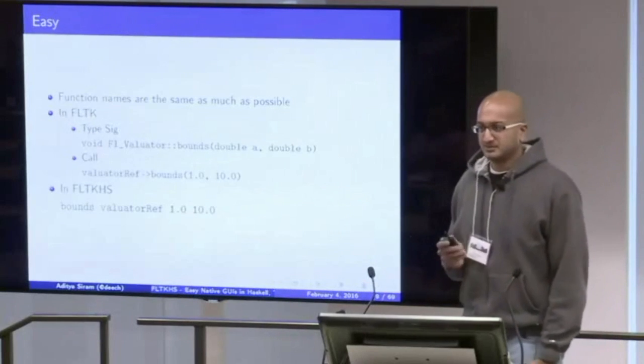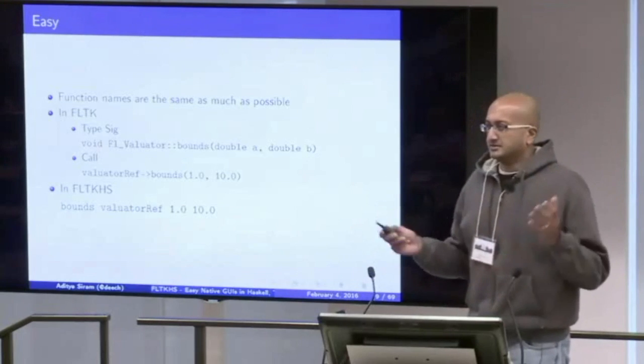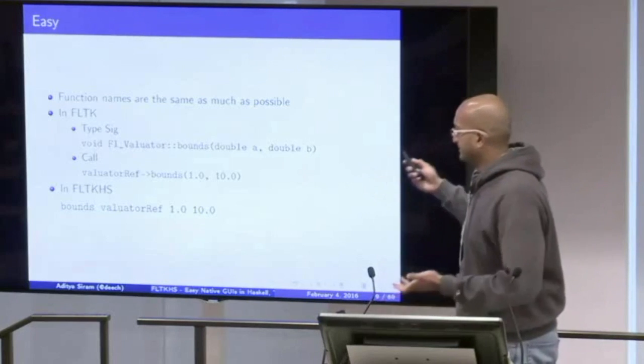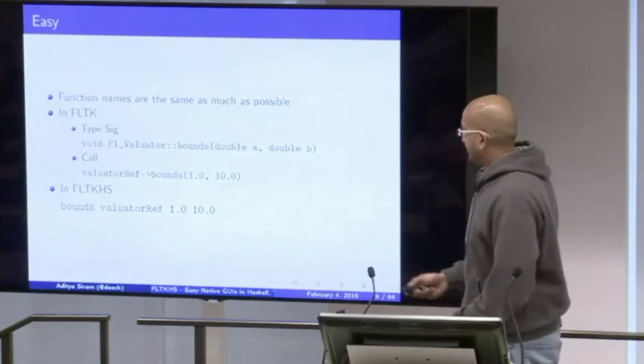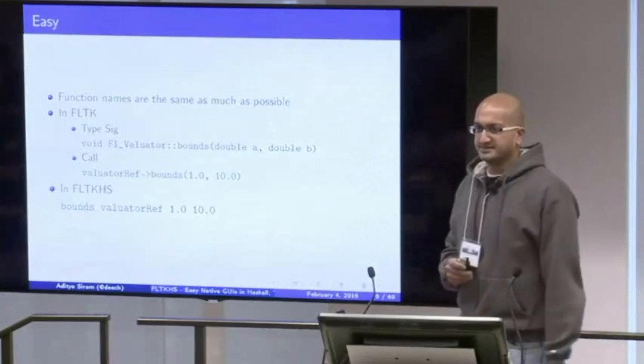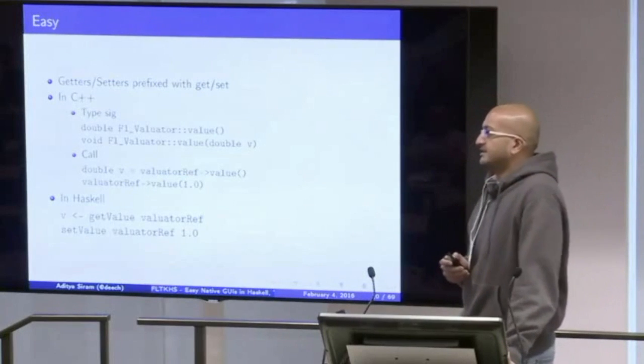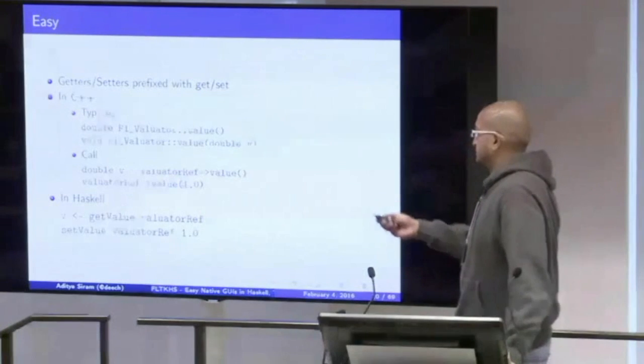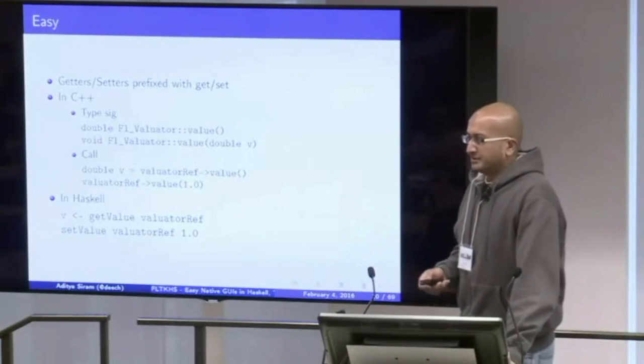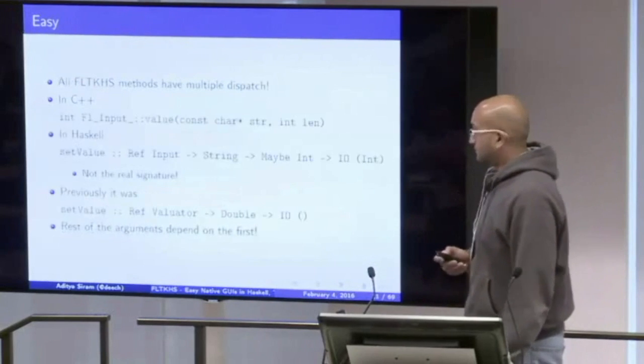So widget names. If I had a widget called FL underscore widget, that translates to ref widget. Ref is just an abstraction for a pointer of some sort. So ref widget means I'm pointing to an instance of widget. FL light button translates to ref light button. I've removed the FL prefix and I've removed the underscores. Widget construction is similarly easy. If you were going new space FL widget in C++, you would just go new widget in Haskell, and you would get back a ref to a widget. I've tried to keep the function names the same as much as possible. So there's a widget called evaluator that takes a minimum and a maximum. It's sort of a parent widget for things like dials and sliders that have a minimum value and a maximum value. And there's a member function called bounds that takes the minimum and the maximum. It's called bounds in C++, it's called bounds in Haskell.